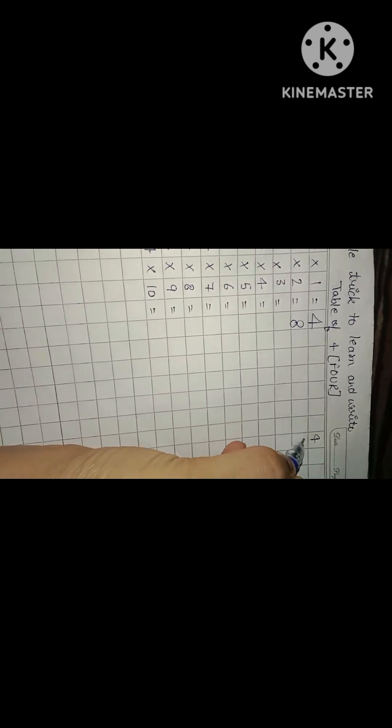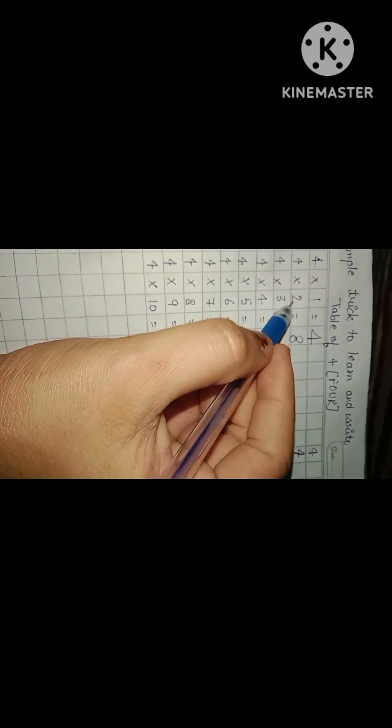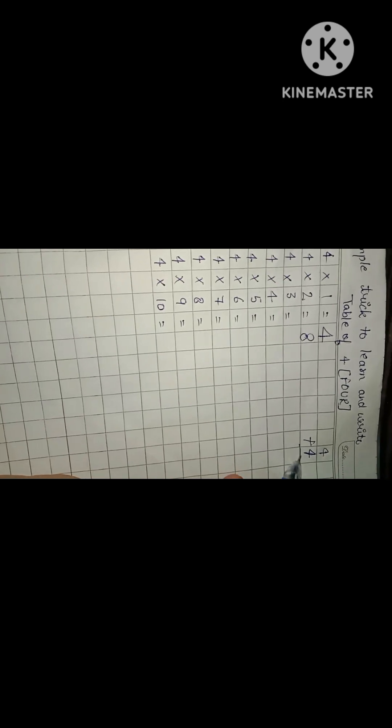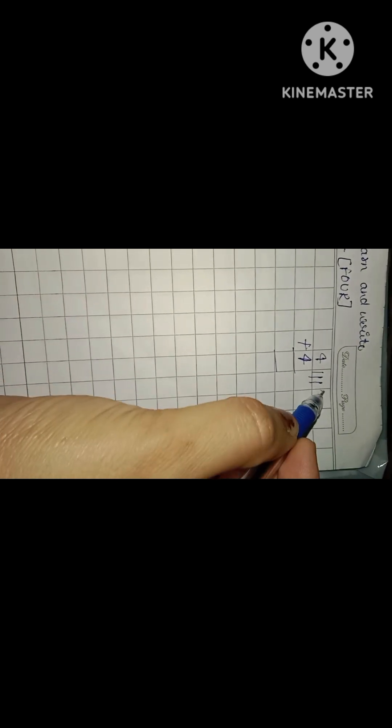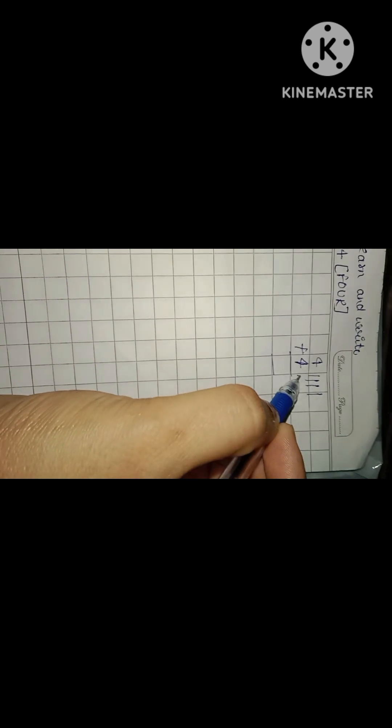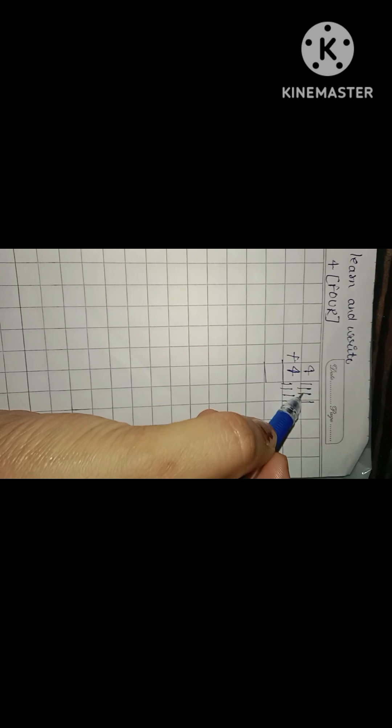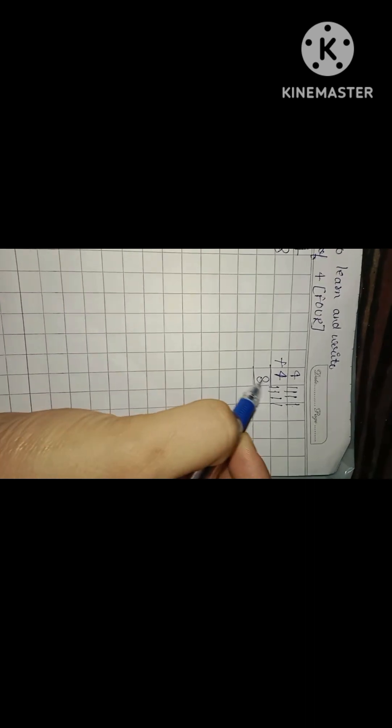In a simple way, let me explain. You will make your child learn 4 plus 4. Why two times? Because there is written 2 times 4, so add it. Then what comes? One, two, three, four, then again one, two, three, four. Count one, two, three, four, five, six, seven, eight. So it is 4 times 2 equals 8.